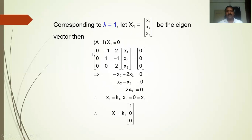The rank of this coefficient matrix is 2, and the total number of variables is 3. So we can take one variable as a free variable and express all others in terms of it, treating that free variable as an arbitrary constant. Here, from 2·x3 equal to 0 we get x3 equal to 0, and plugging into the second equation gives x2 equal to 0. So x2 and x3 are zero, leaving x1 as the free variable — take x1 equal to k1.